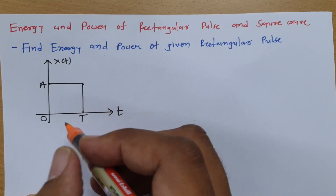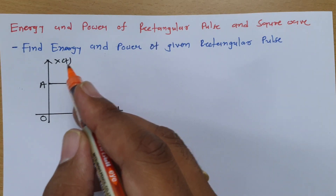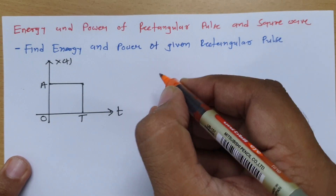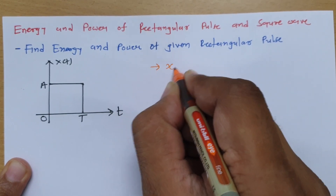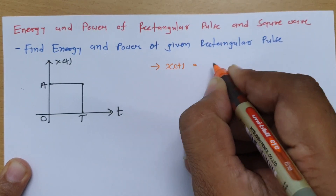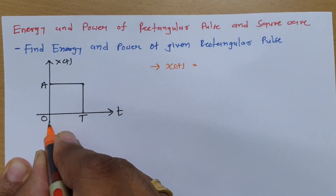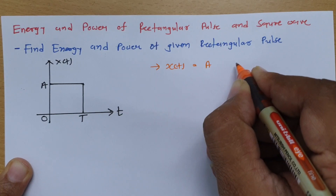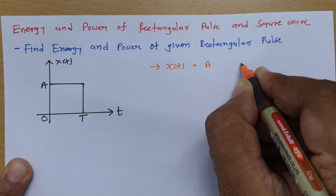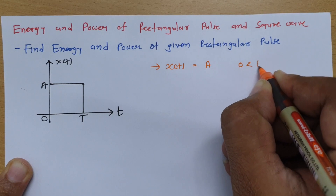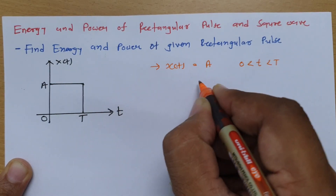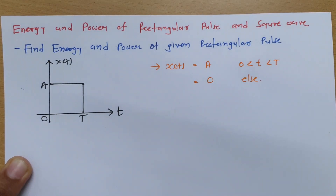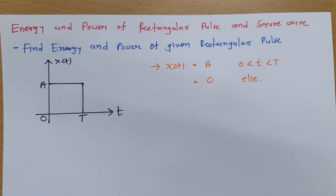To calculate energy first, we need to define the signal as a function. We can say function x(t) has magnitude A in the range of time 0 to T, and else it is 0.